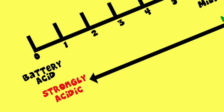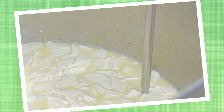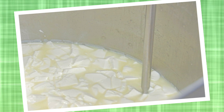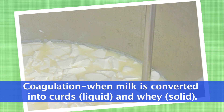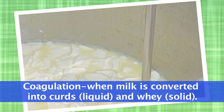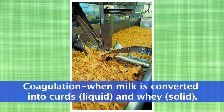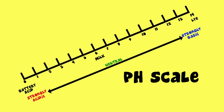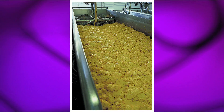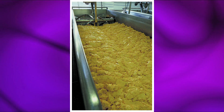Acid is very important to make the cheese. After acidification, coagulation begins. Coagulation is when milk is converted or changed into curds, which is the liquid portion, and whey, the solid portion. As the pH of the milk continues to change, the structural nature of casein, a protein found in milk, changes, which causes the formation of these curds.